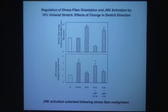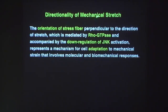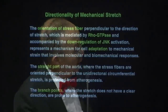To summarize: in the first round of stretch, JNK goes up while stress fibers are not aligned; when stress fibers align, JNK goes down. When you rotate 90 degrees, JNK is activated again; once stress fibers re-orient perpendicularly, JNK subsides again. So JNK activation subsides following stress fiber realignment. The directionality of stretch orients stress fibers perpendicular to uniaxial stretch, mediated by Rho GTPases, and this is accompanied by transient JNK activation — a mechanism for the cell to adapt to mechanical strain and maintain quiescent signaling.